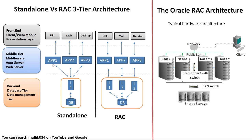In case this instance fails, all three applications are going to have downtime — this application is no more able to communicate with the database. Whereas in RAC, all three applications can talk to any one instance. And if any one instance goes down, the application automatically switches over to any other surviving instance.